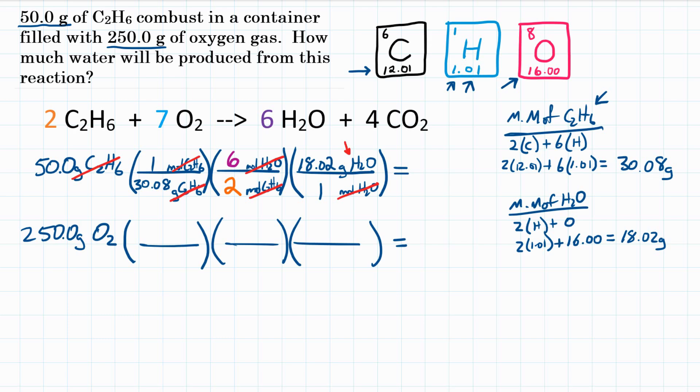So if we went to solve this problem, in your calculator you would put 50.0. Divided by the bottom of the first fraction, because the top is 1, so it won't change anything. So divided by 30.08 times the top of the second fraction, 6. Divided by the bottom, 2.